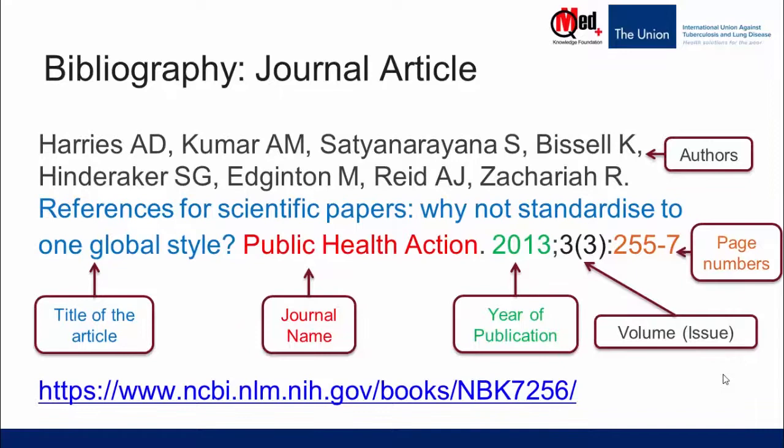Within each reference we provide many details like author names, the title of the article, the name of the journal in which it was published, the year of publication, and some indication about the location of the article in the journal — for example, the volume, the issue in parentheses, and the page numbers. These are the details that go into referencing a journal article. But if it's another type of reference like a book or book chapter, it's going to be different fields. Details are provided in the URL link below.